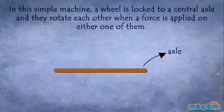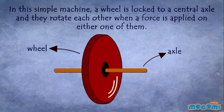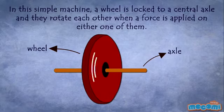In this simple machine, a wheel is locked to a central axle and they rotate each other when a force is applied on either one of them.